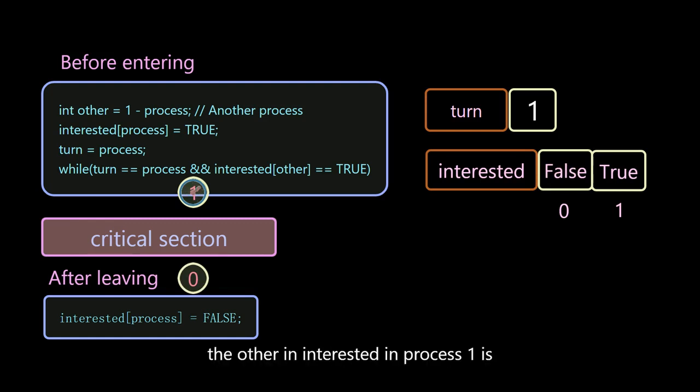At this time, the other interested in process 1 is false, and the conditional statement in while is false, and it starts to enter the critical section.